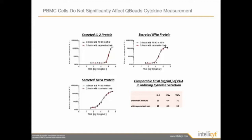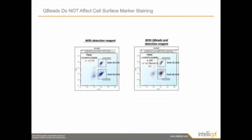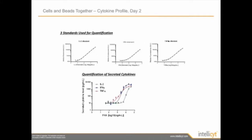As part of validating the assay, the researcher had to make sure the PBMCs didn't affect the ability of the Q-Beats to capture the secreted cytokines. With all three cytokines, the Q-Beats were able to capture the secreted proteins with and without the presence of cells. Even the EC50 values were very similar. The Q-Beats didn't interfere with the cell surface marker staining — about 20% of CD3/CD8 positives were identified and about 60% of the CD3/CD8 negative cells were identified. Once the researcher verified these components didn't affect each other, they were confident to move forward with this multiplex no-wash assay.